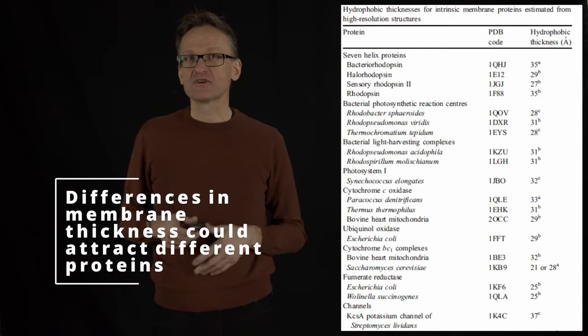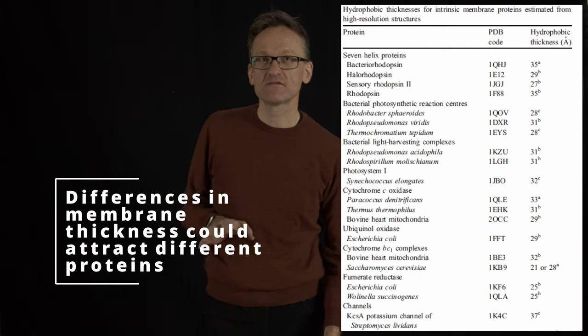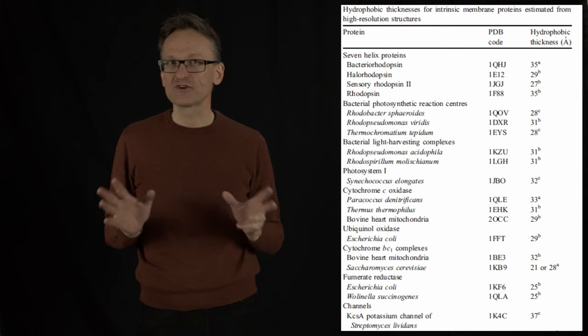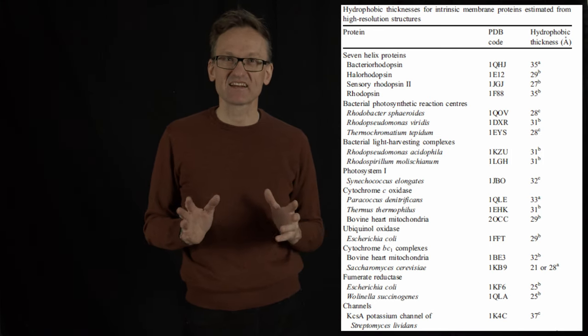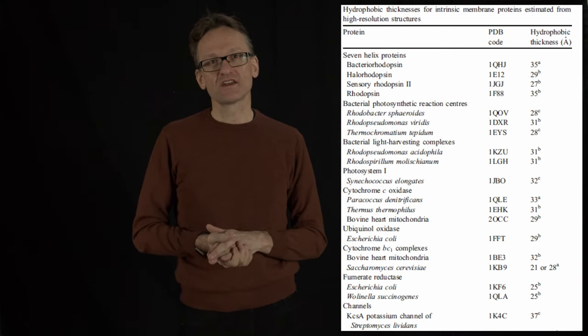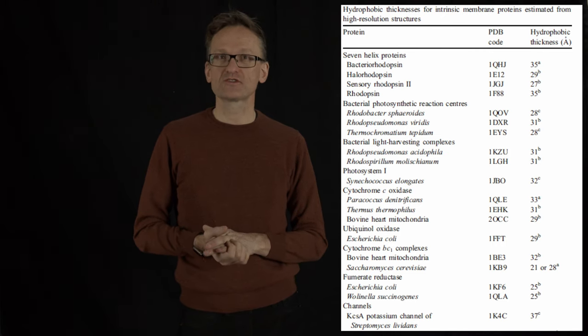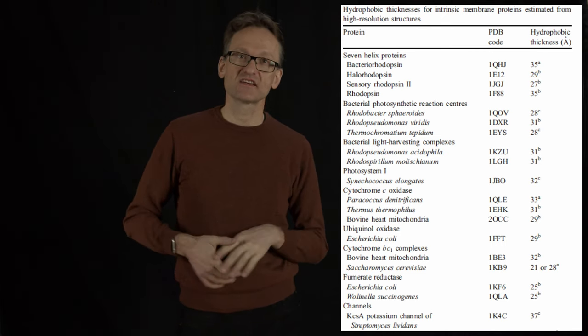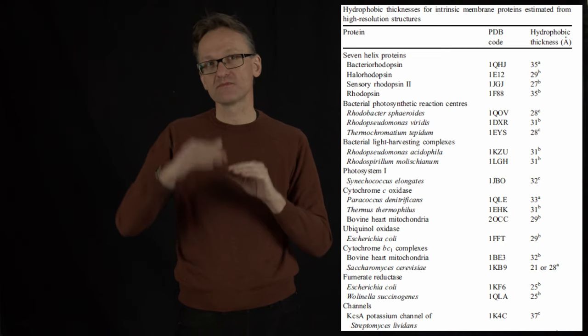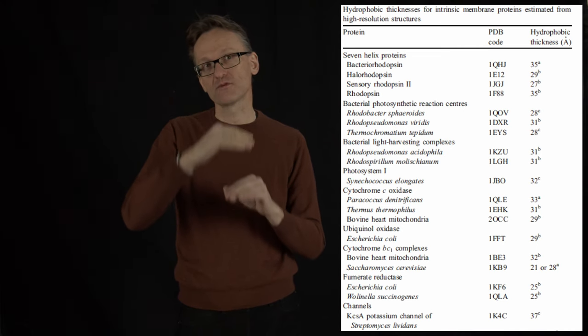Most membranes have roughly this thickness, but not all. This is hard to determine exactly, but if you look at different organisms, to first approximation they have roughly similar membrane thicknesses—again, ballpark of 30 angstrom, maybe 25 in the hydrophobic region.